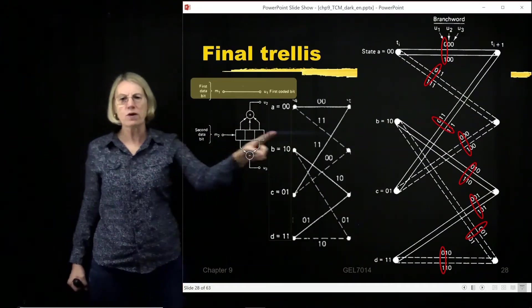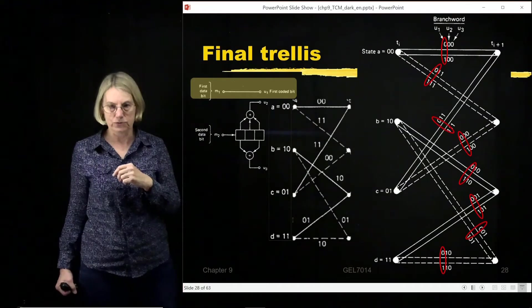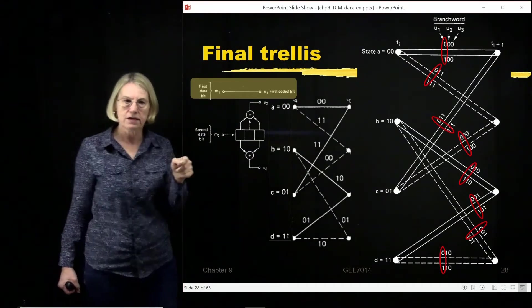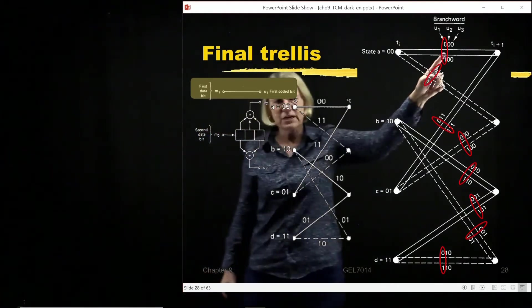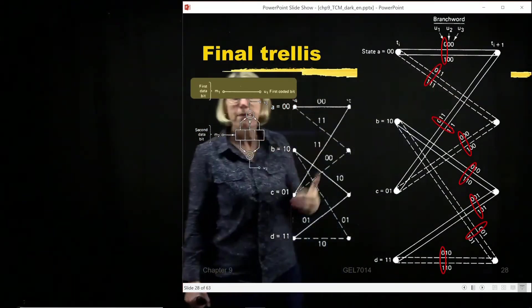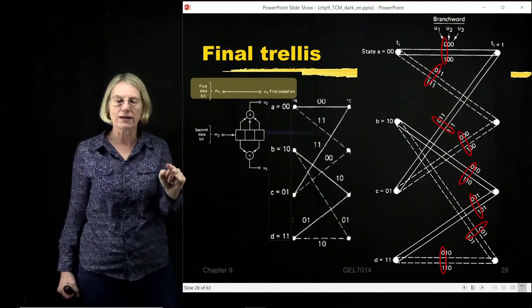So each one of the transitions in the trellis has two possible values, two possible bit sequences which apply to it. For instance, the bit sequence 0, 0, 0, or the bit sequence 1, 0, 0, they would both be represented by the same transition in the trellis.